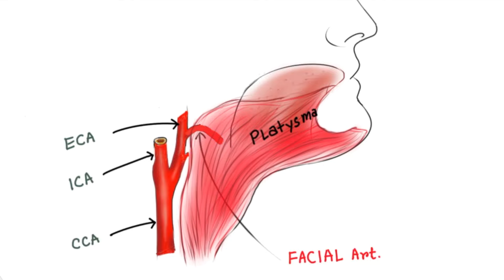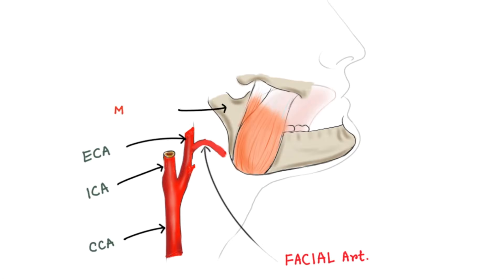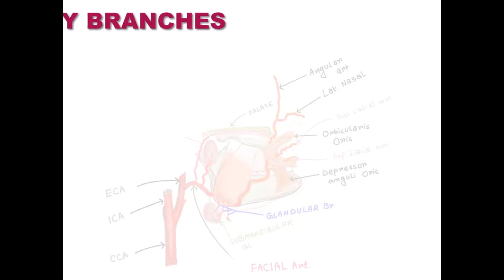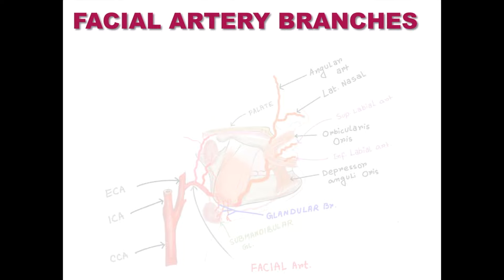Here is the mandible and the masseter muscle. The facial artery passes deep to the stylohyoid and posterior belly of the digastric muscle, and emerges over the edge of the mandible just at the antero-inferior portion of the masseter muscle, where you can feel the pulse.